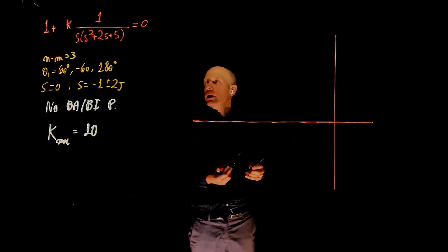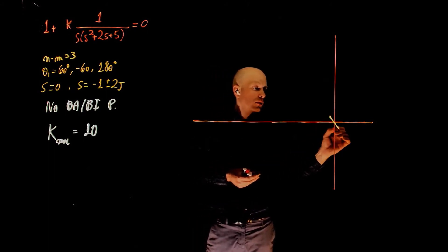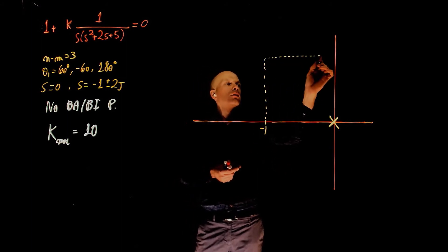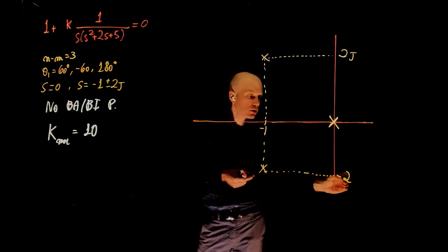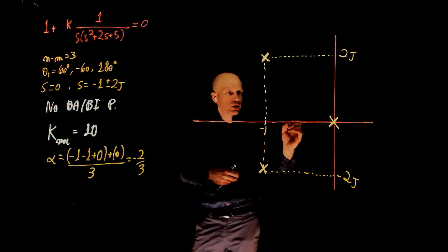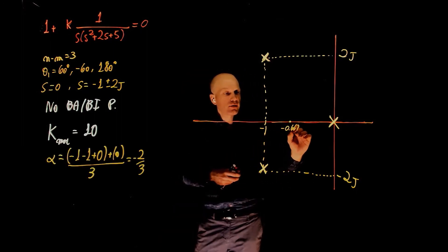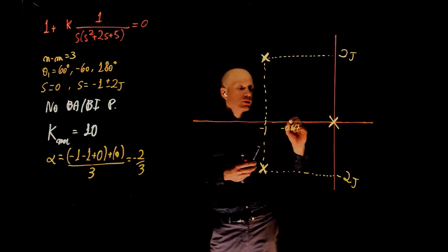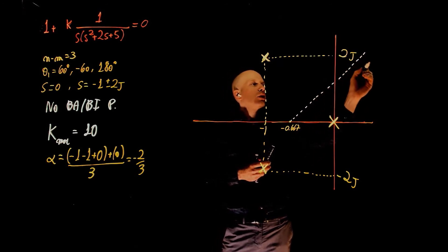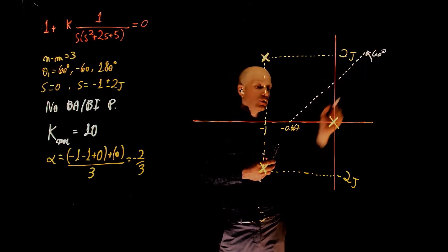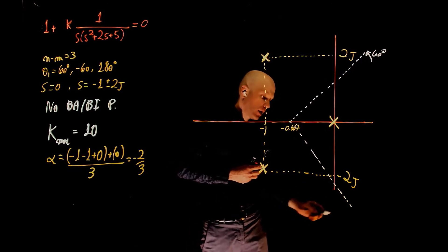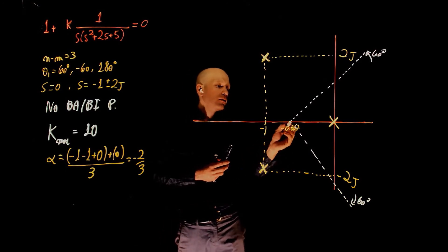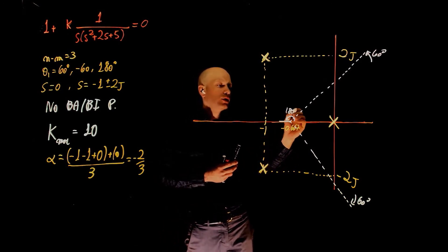Now let's place the poles on the s-plane. The first one is at 0, and the other two are at negative 1 plus minus 2j. One of the asymptotes now goes up at an angle of 60. The other one goes down at negative 60. And the third one goes to negative infinity with an angle of 180 degrees.